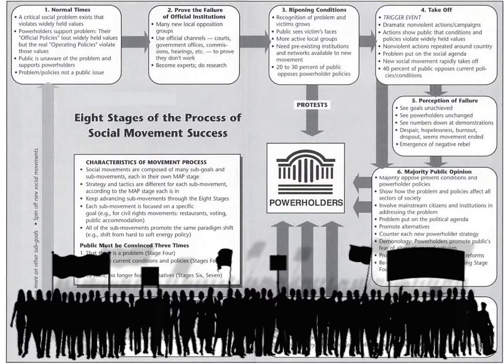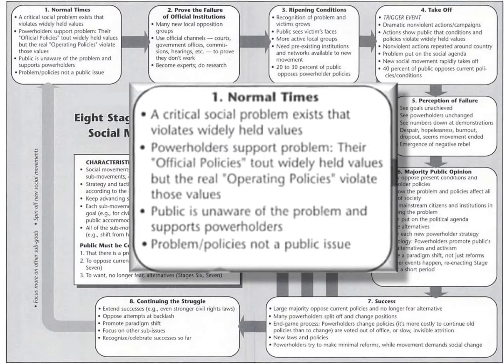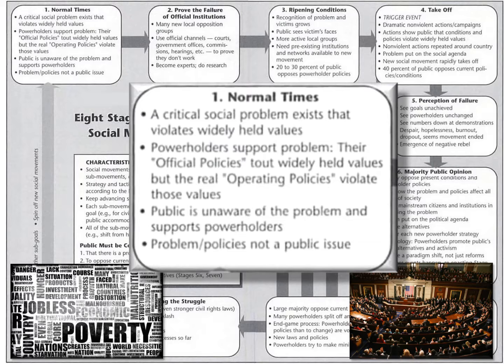The first phase is what Moyer called normal time. Critical problems may exist in the society, but power holders and official institutions are not trying to make people aware of them or to fix them. Consequently, awareness of the problem is often quite low.